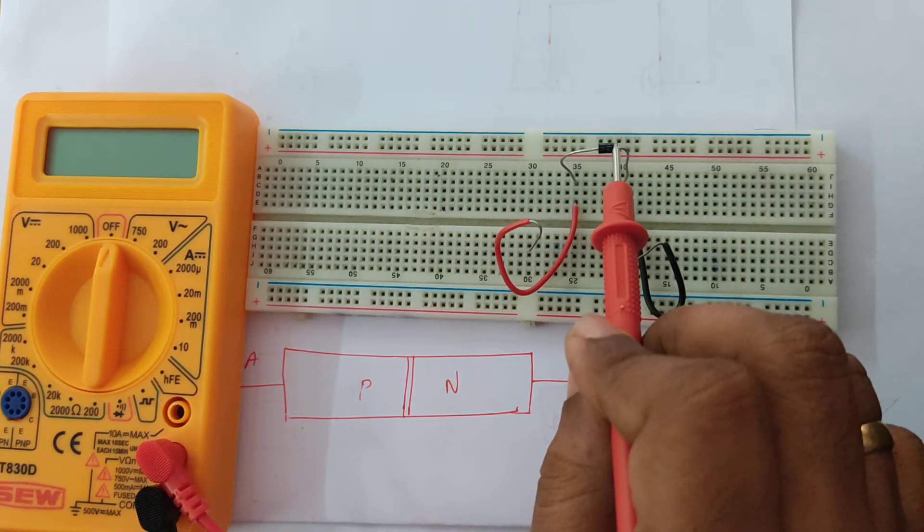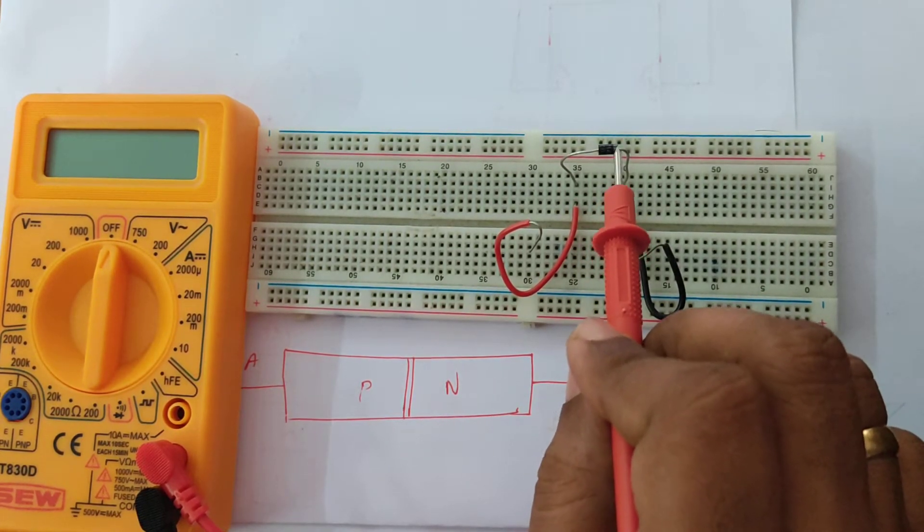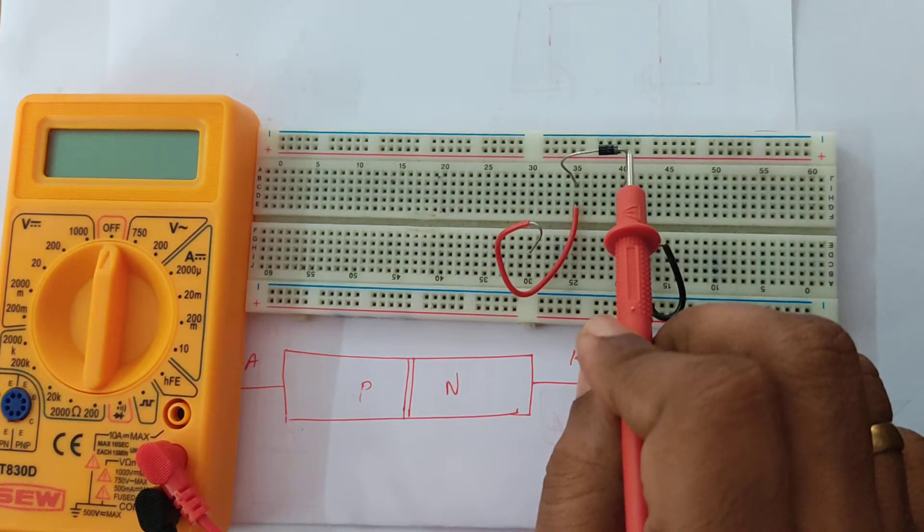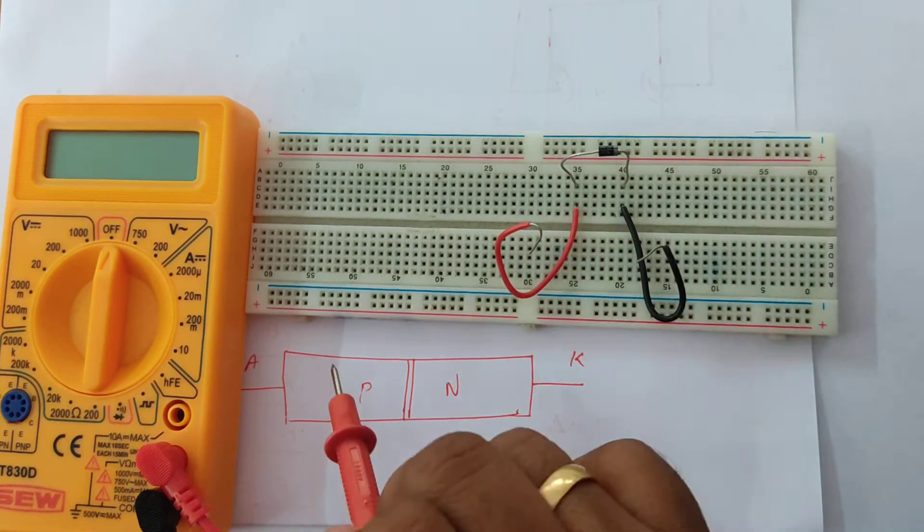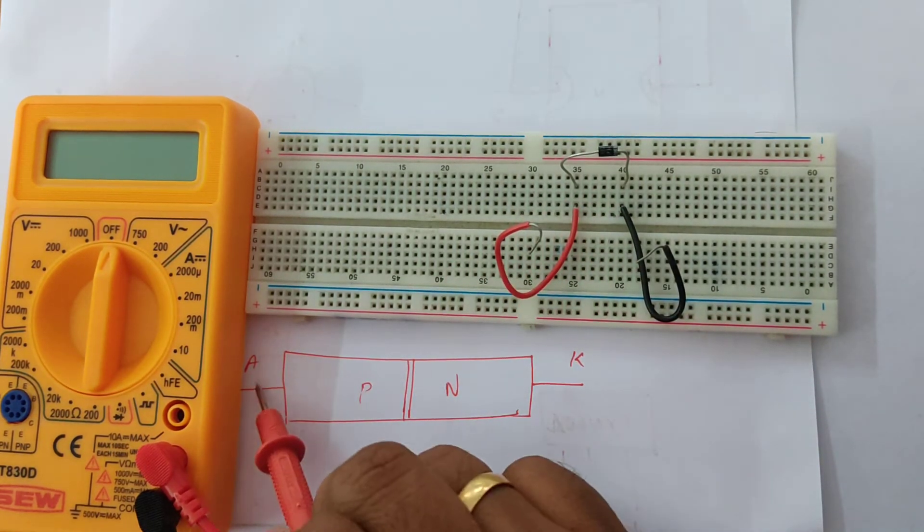To identify a cathode terminal there would be a ring printed on the device. The terminal which is adjacent to the ring is the cathode, the other end is the P-type, anode.